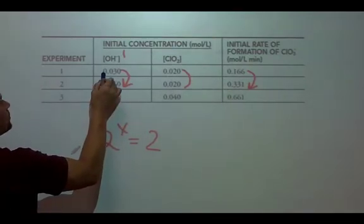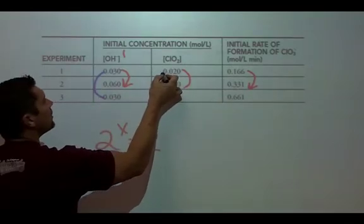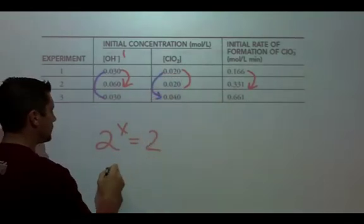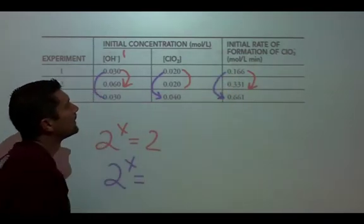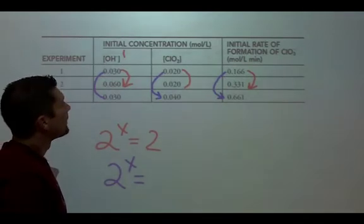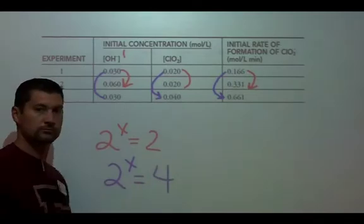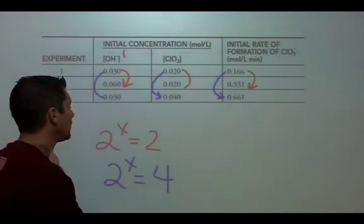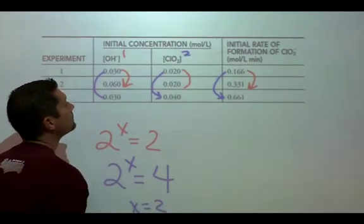I notice in experiments one and three, hydroxide stays the same. ClO2 doubles, and the rate quadruples. Therefore, X is to the second order.